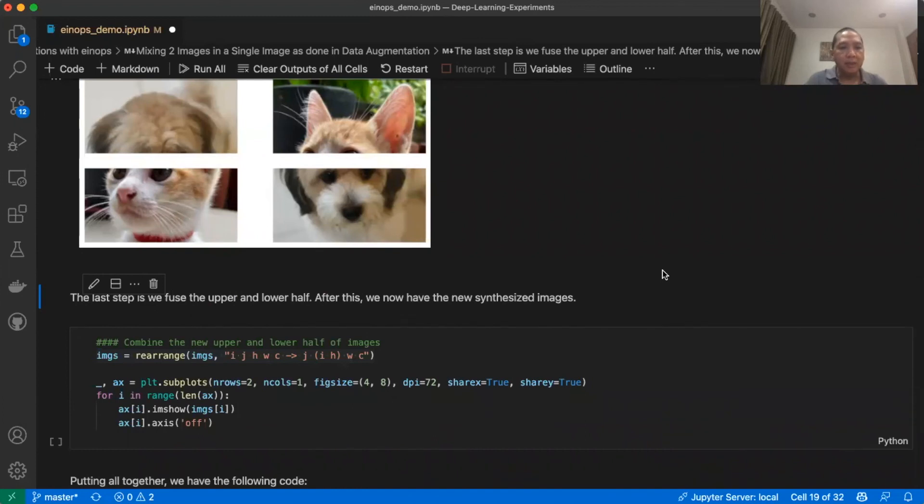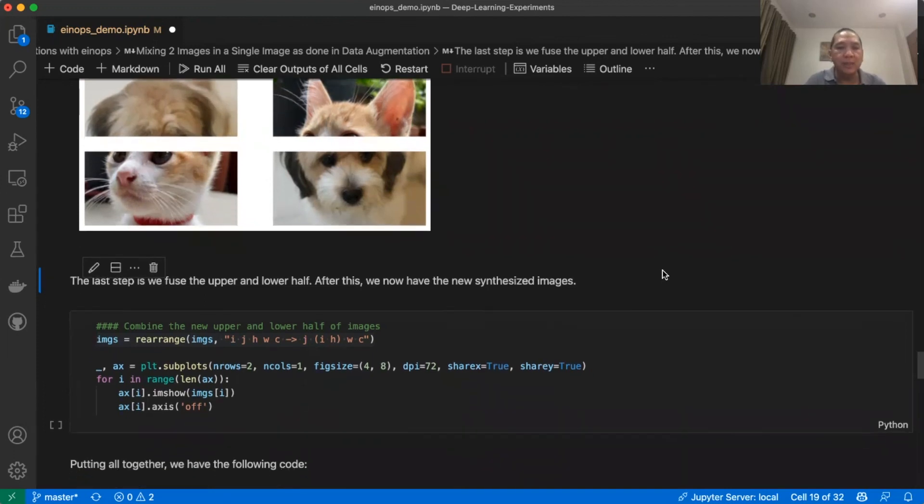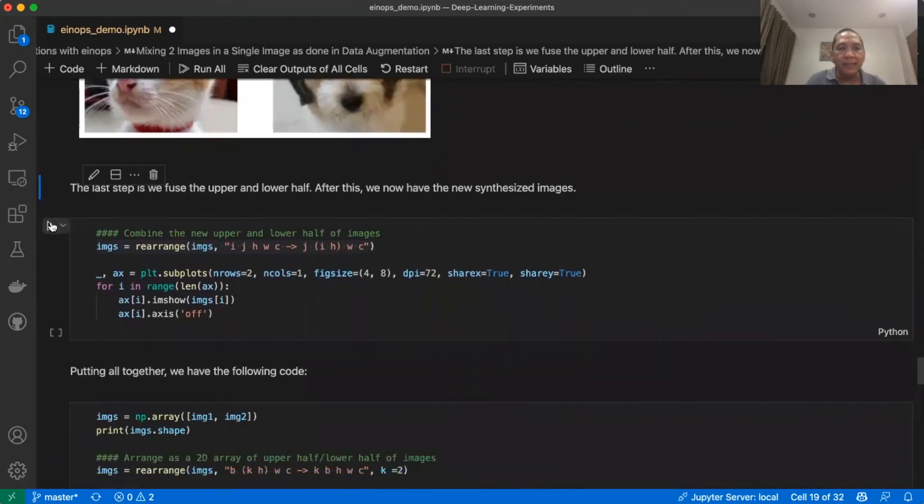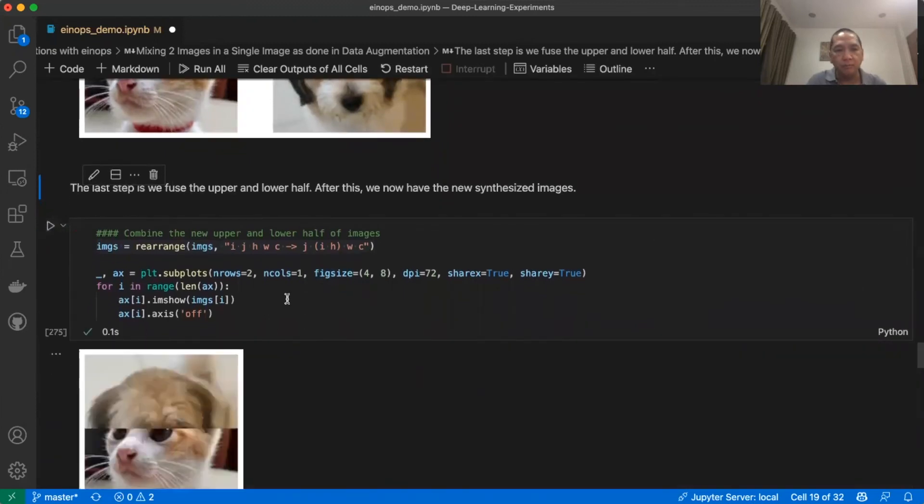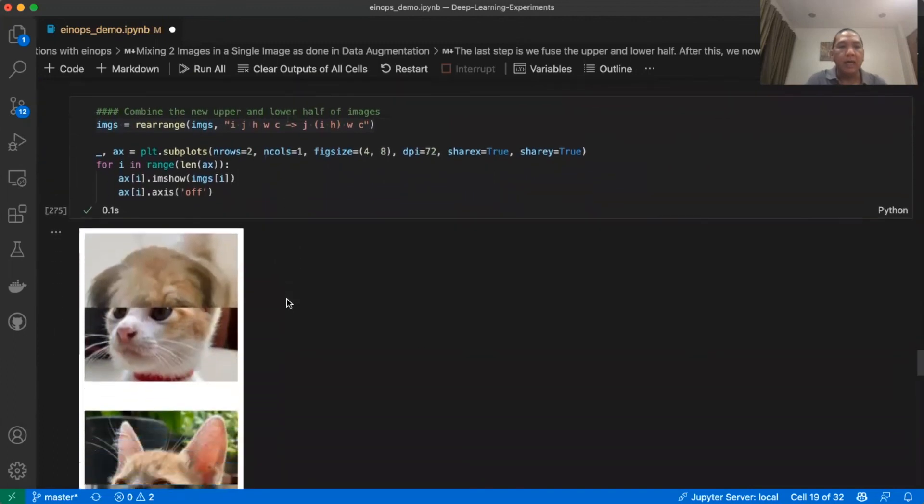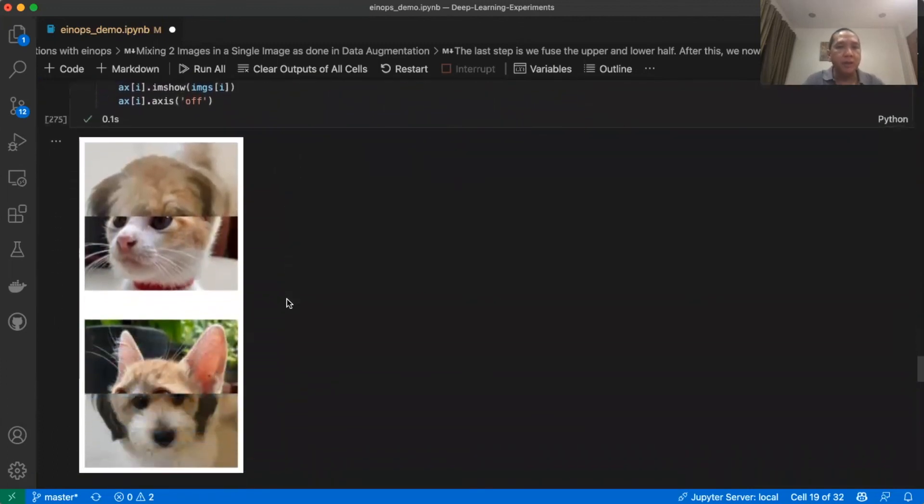The last step is we fuse the upper and lower half. After this, we now have the new synthesized images. Let us execute this code. And these are the target images.